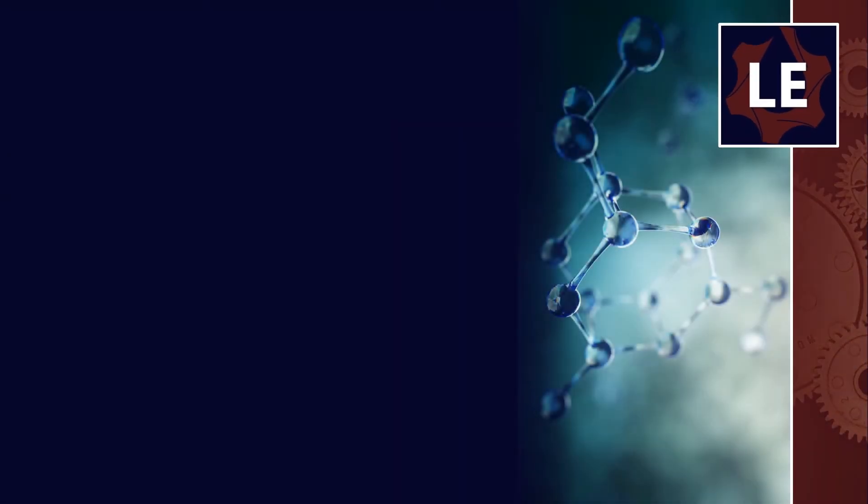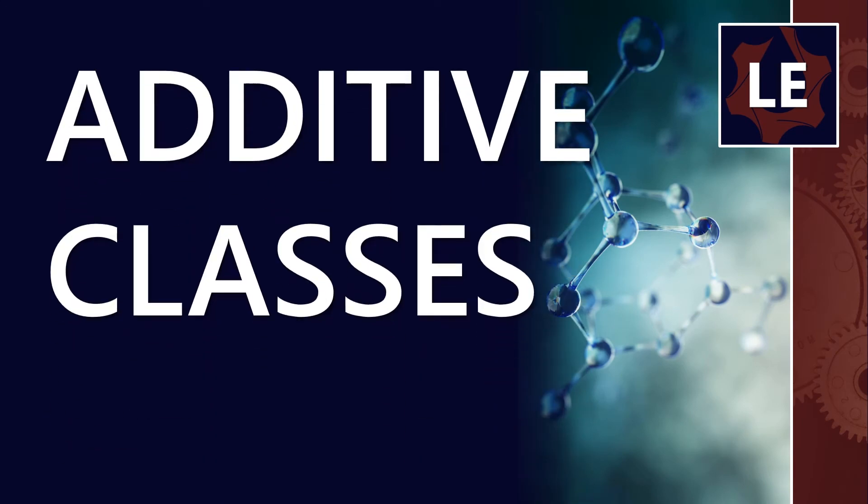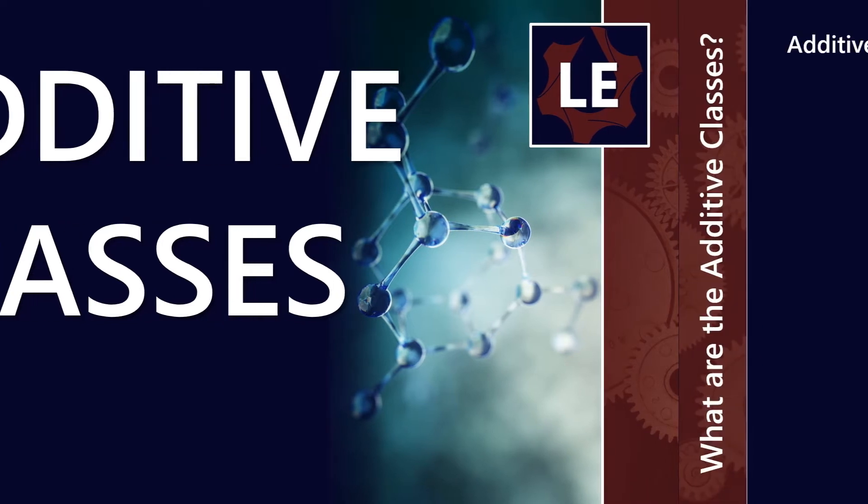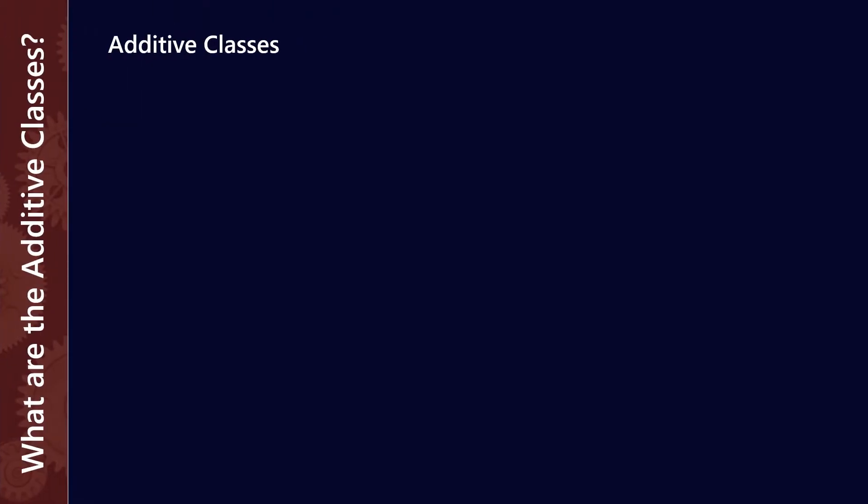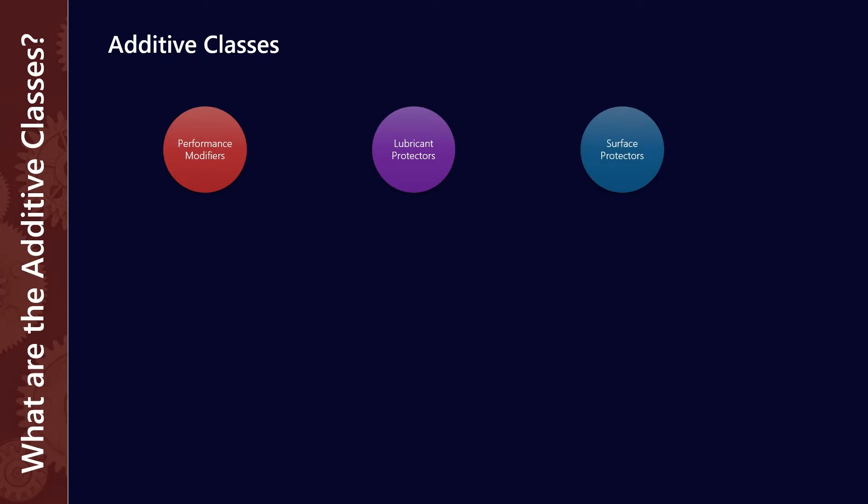In this video, we're going to talk about different classes of additives and what they do for the system in a pretty general way. What kind of different additive classes are there? We're going to group them arbitrarily into three different groups: the performance modifiers, the lubricant protectors, and the surface protectors.